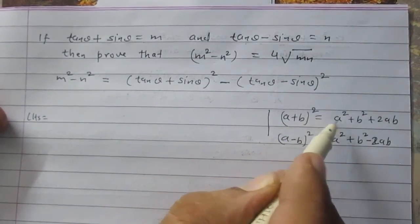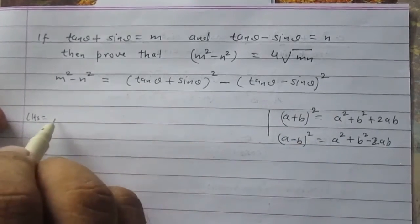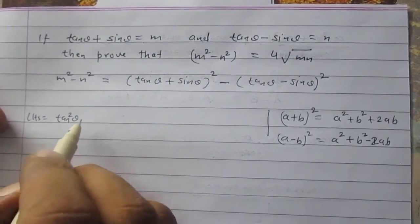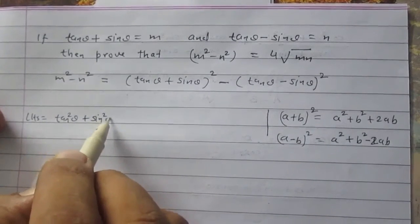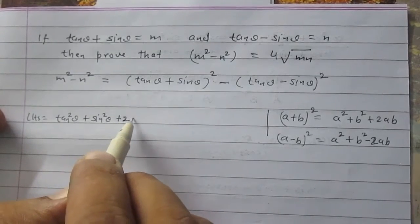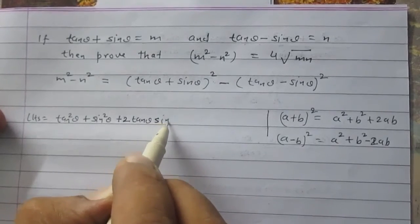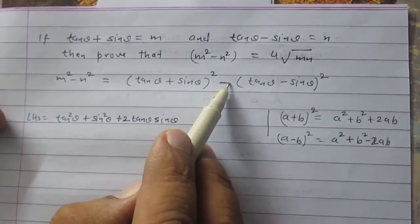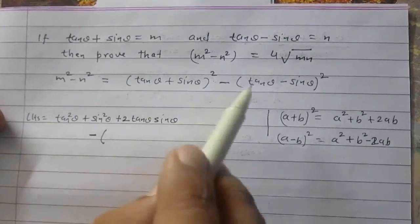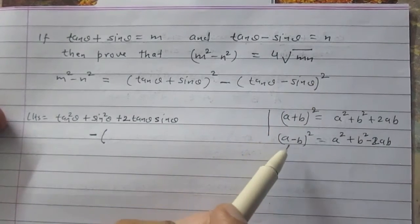For (tan θ + sin θ)², where a stands for tan θ and b stands for sin θ: the first part is tan²θ (which is a²), then sin²θ (which is b²), and then plus 2·tan θ·sin θ (which is 2ab).